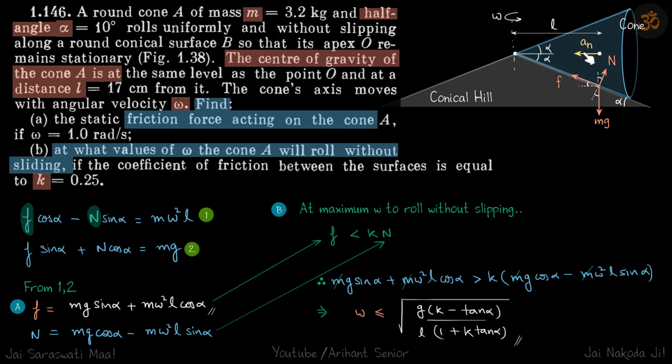Now they have given that the center of mass of the cone is at a distance L from the center and this cone is rotating with angular velocity omega. We need to find the friction force acting on the cone, and secondly, at what values of omega will the cone roll without sliding.